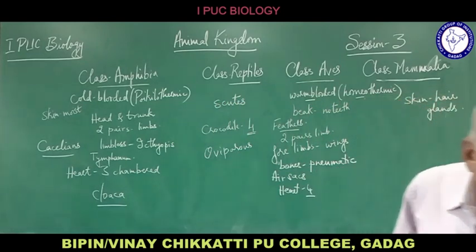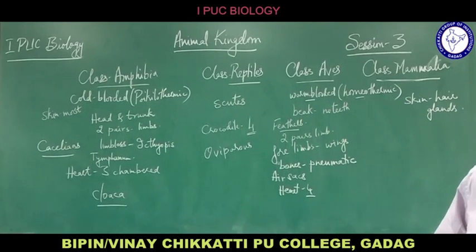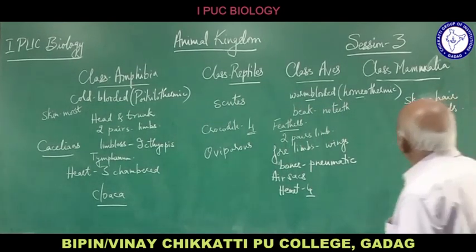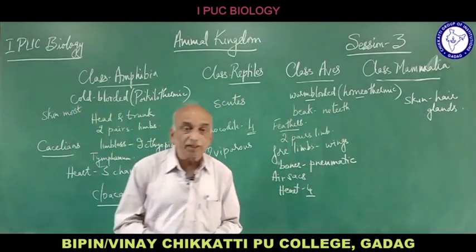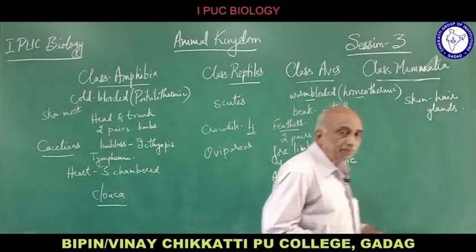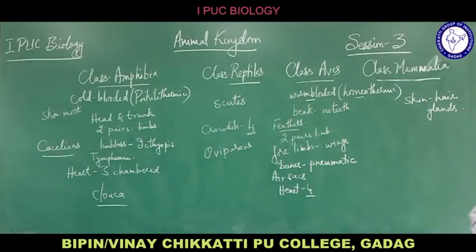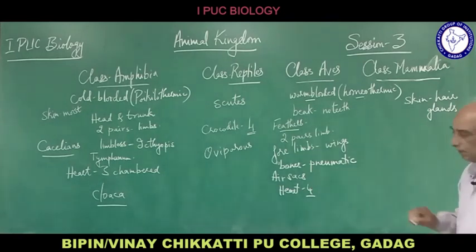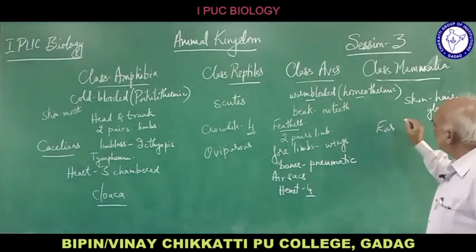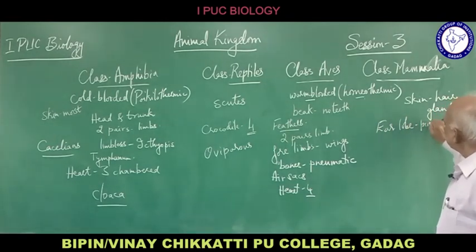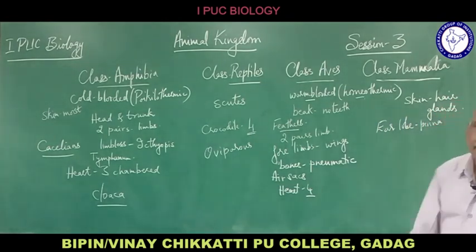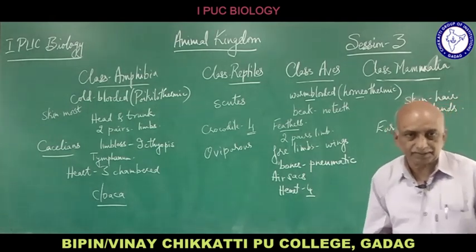Mammals are found in different types of habitats — arboreal, aquatic and terrestrial. Presence of a well-developed ear lobe or pinna is an important characteristic feature of this class.